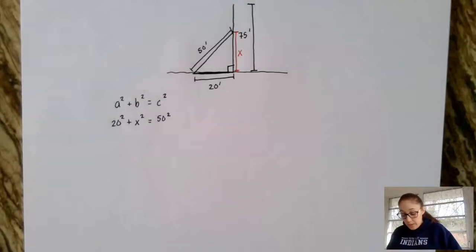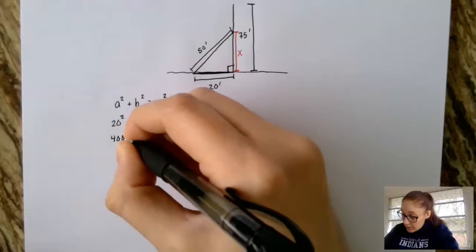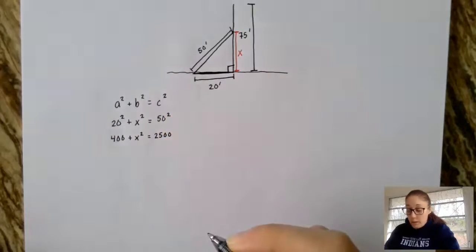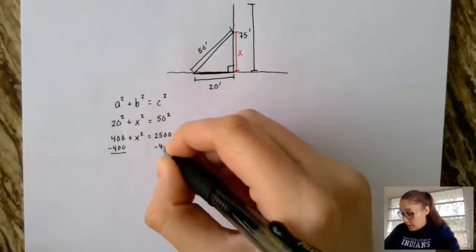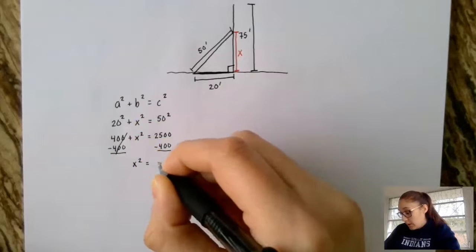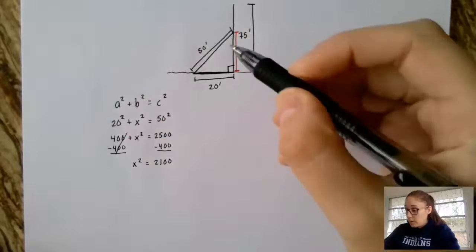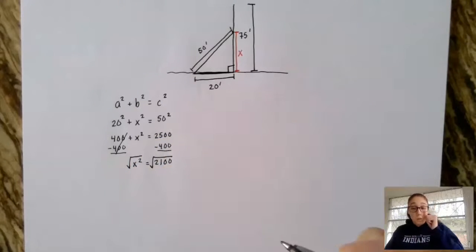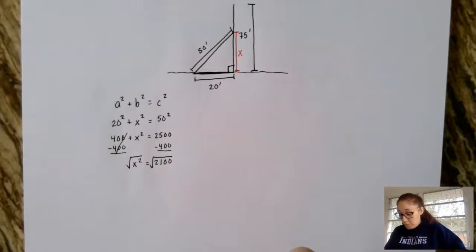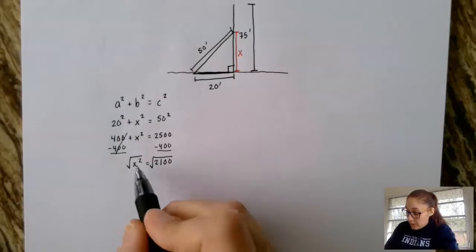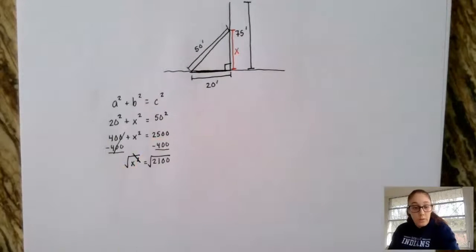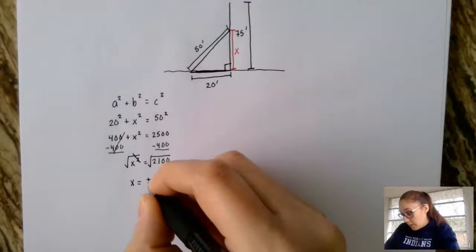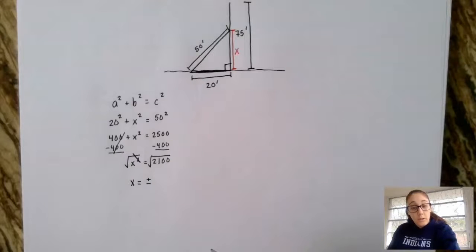So we can go ahead and do a little bit of math. If we do 20², we get 400. 50², we get 2500. We're going to subtract both sides by 400, and we get x² = 2100. Now we want to know what x is, not what x² is, so we're going to square root. And this is where we see a radical. It's definitely not as complex as what we've been seeing. So the square root of something squared, those two undo each other, they cancel each other. So we have x equals, and remember that when you square root something, you have plus or minus. You can have two positive answers or two negative answers.